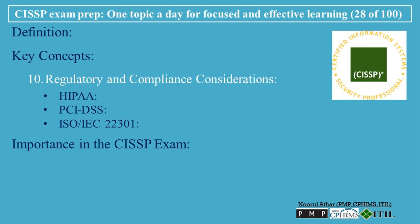Importance in the CISSP Exam: The Business Impact Analysis, BIA, is a critical part of the Security and Risk Management domain in the CISSP exam. CISSP aspirants need to understand how to conduct a BIA, identify critical business functions, assess the potential impacts of disruptions, and determine appropriate RTOs and RPOs. Exam questions may focus on how the BIA fits into broader Business Continuity Planning, BCP, and Disaster Recovery Planning, DRP, processes, as well as the role of BIA in prioritizing recovery efforts.